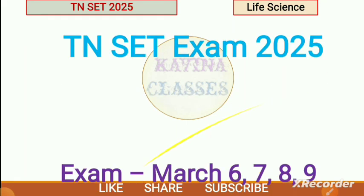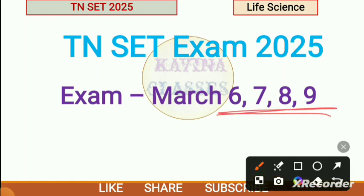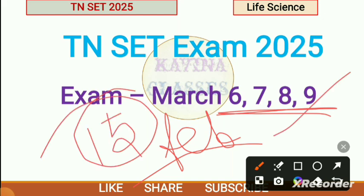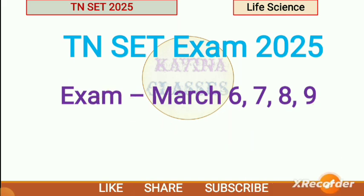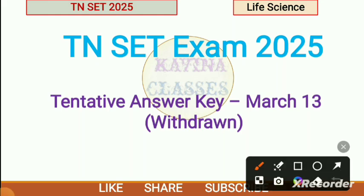We know that the exam was held on March 6, 7, 8, 9, and 10. When we get into February, we will announce the date — within 15 days of the exam.